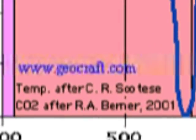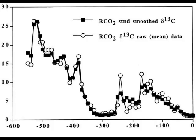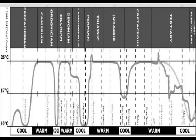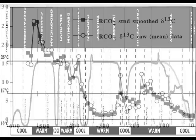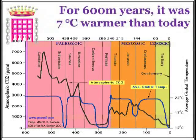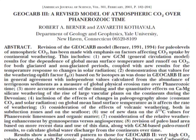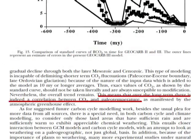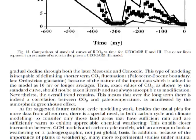Monckton's sources for no correlation between CO2 and temperature are shown right here: two researchers, Berner, who compiled a graph showing CO2 levels, and Scotties, who compiled a graph showing temperatures. Put the two together and you get the graph Monckton used. Scotties hasn't done any analysis of correlation, but Berner has. Let's look at the paper where the data Monckton used was published. Berner's conclusion reads: over the long term there is indeed a correlation between CO2 and paleotemperature, as manifested by the atmospheric greenhouse effect. Did Monckton somehow miss this?